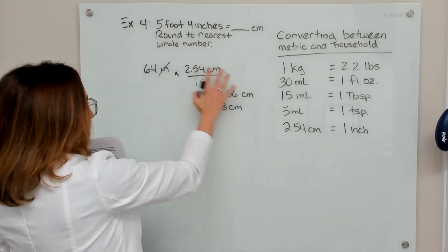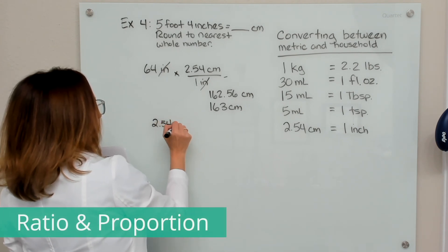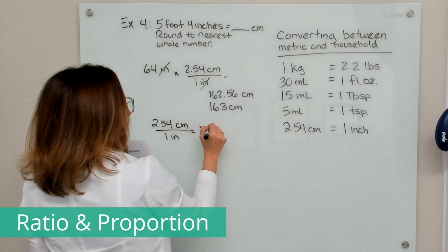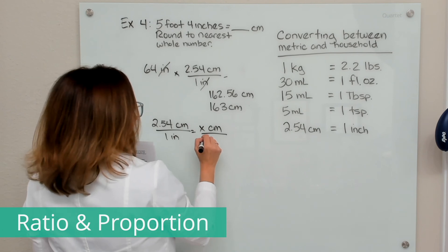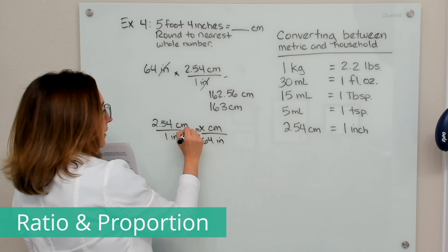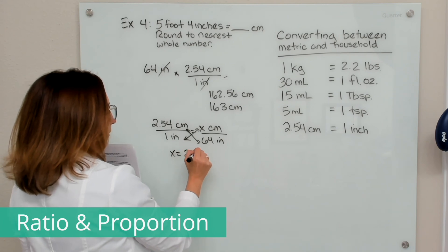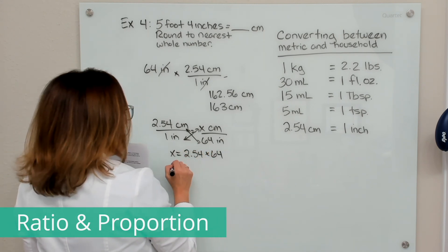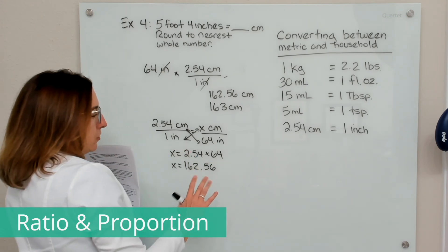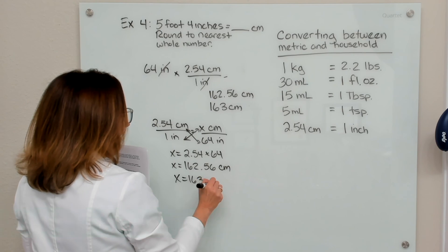We can do the same problem using ratio and proportion. I know that 2.54 centimeters equals one inch, and I want to know how many centimeters are in 64 inches. Cross multiplying: one times x is x, and 2.54 times 64 equals 162.56. Rounding to the nearest whole number gives us 163 centimeters.